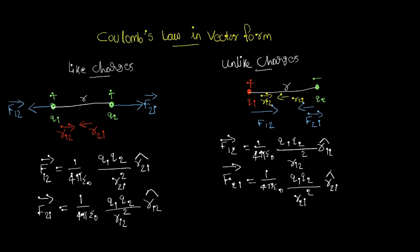These are the four equations: vector F12 and vector F21 for like charges, and vector F12 and vector F21 for unlike charges. Note that R12 is the distance from Q1 to Q2 and R21 is the distance from Q2 to Q1 — these are in opposite directions. So R12 equals minus R21, and therefore F12 equals minus F21. This result shows that it obeys Newton's third law.